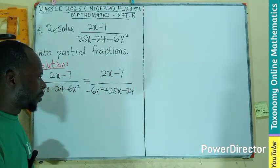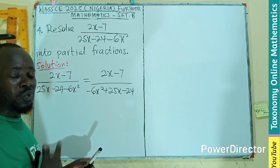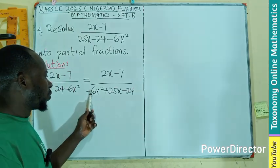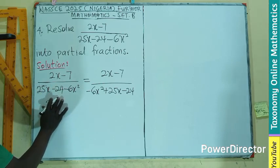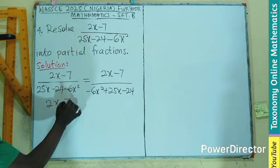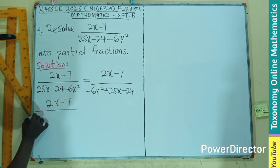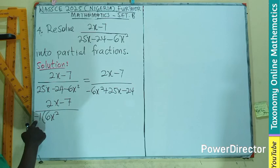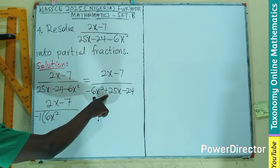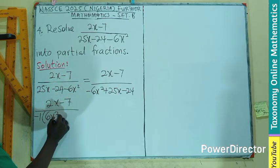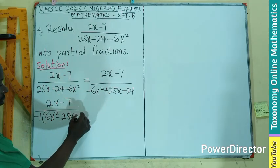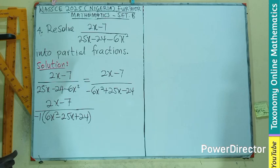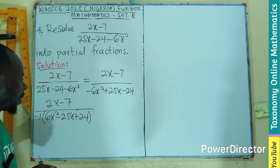I am going to rewrite it with the x squared term coming first as minus 6x squared, the x term which is plus 25x, the constant term as minus 24. We always want to work with the x squared term coefficient to be positive. I am going to factorize the negative one out to have my 2x minus 7.